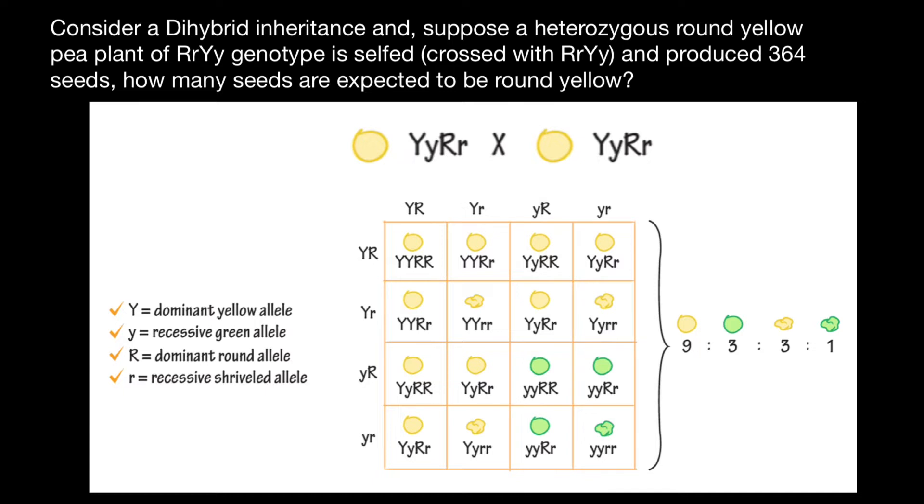but they produce haploid gametes. For example, parent one can produce the following gametes: capital Y and capital R, this variant here. Another variant would be capital Y and small r, this variant here. Small y and capital R, this variant here. And small y and small r, this variant here. Because parents have the same genotype, the second parent also produces the same variants of gametes. One more time, gametes are haploid.